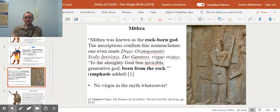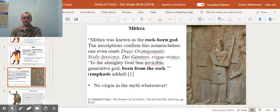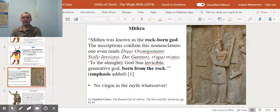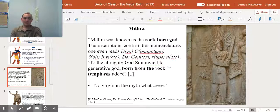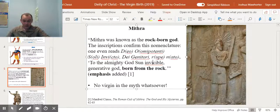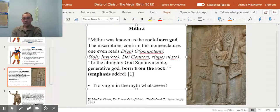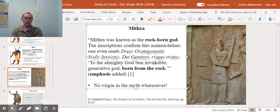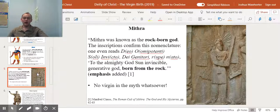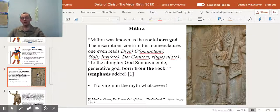Another god, a more Mesopotamian god, Babylonian god, or Persian god, is Mithra. And one scholar says, even quoting an inscription, says Mithra was known as the rock-born god. The inscriptions confirm this nomenclature. Even one says, and it says in Latin, Deo omnipotenti, soli invicto, Dei, janitari. Rupe nato, which in the Latin translation means, to the almighty god, son, invincible, generative rock, born from the rock. No woman, no virgin, no virgin birth. No conception at all. Mithra is said to have been born from a rock. Not even born from a woman. So there's no virgin birth in this story either.